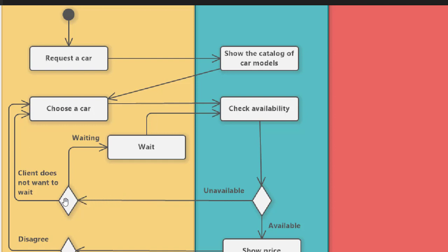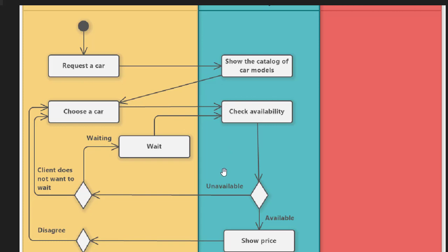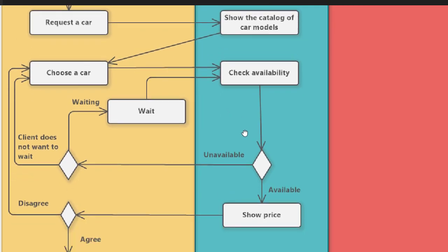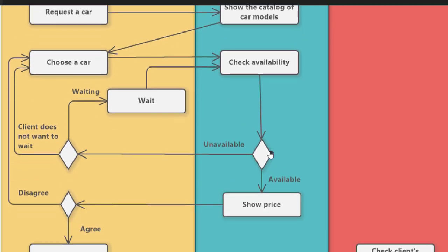If the car is unavailable, there is another condition: does the client want to wait for that car? If they would like to wait, they come back to the 'check availability' activity. If they don't want to wait, they move back to the 'choose a car' activity to select another car.